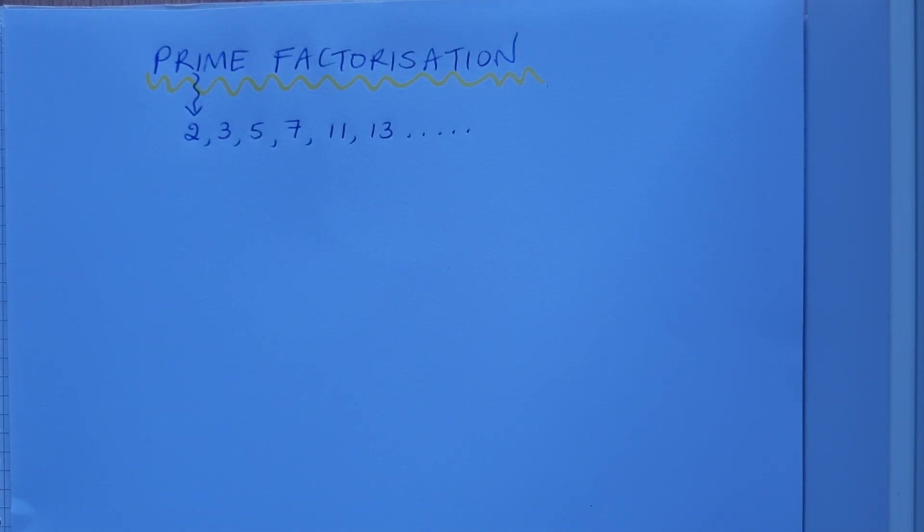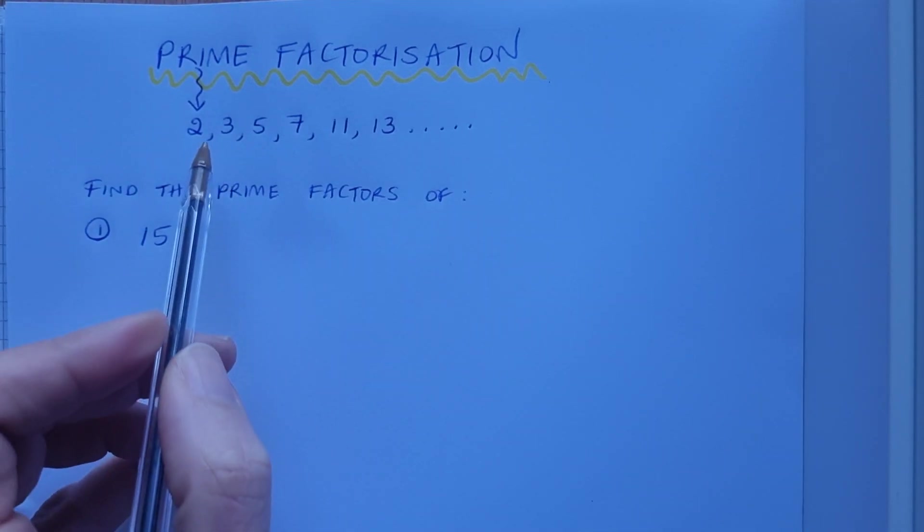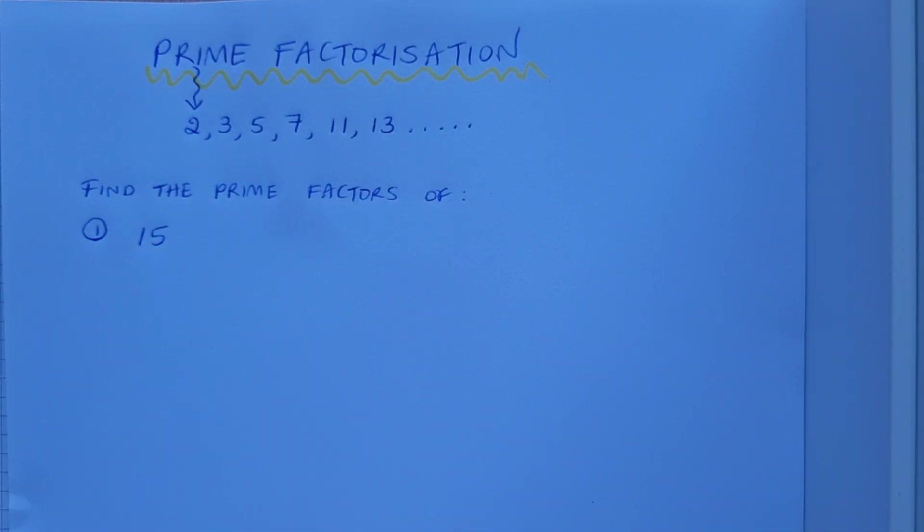So we're going to start off by getting the prime factors of 15. We're going to take 15 and repeatedly divide into it using just the prime factors and prime numbers available to us here.